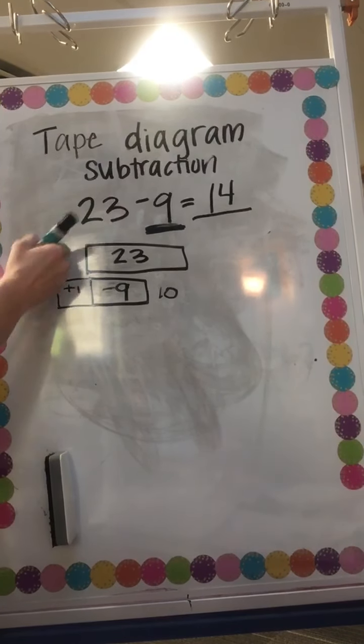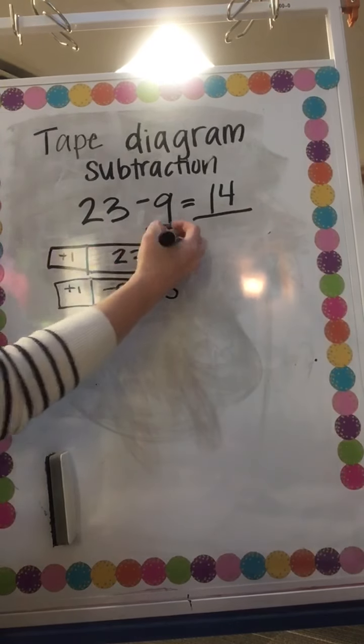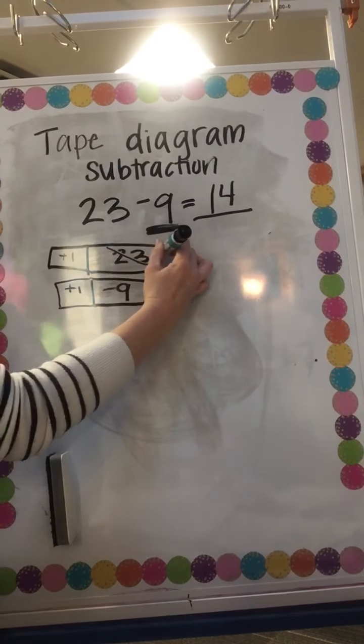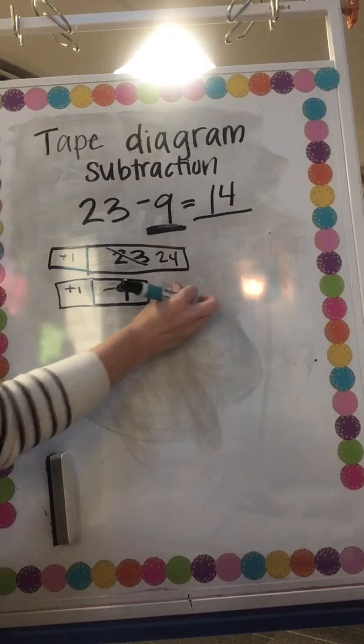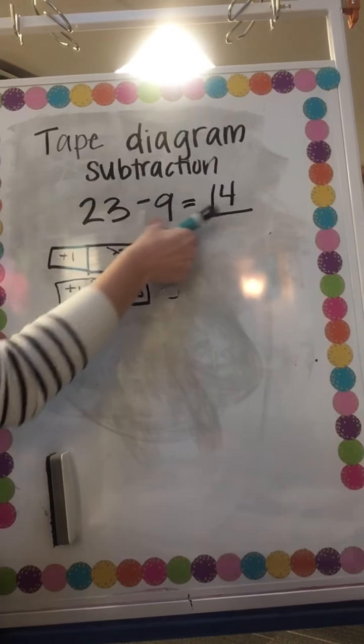And then what I do down here I have to do the same here, so I'm gonna add 1 here and that makes this number 24. I'm gonna cross that out and make it by 10.